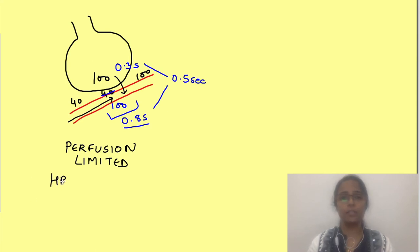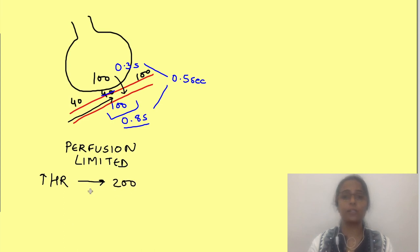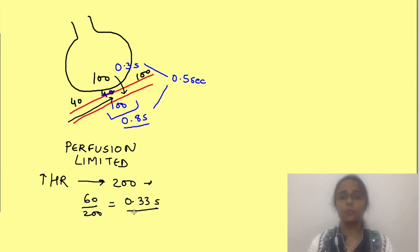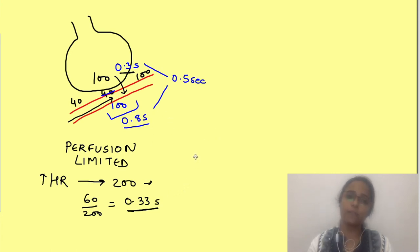What happens when heart rate increases during activity like climbing stairs or exercise? If we consider the maximum achievable heart rate as 200 bpm, the duration of the cardiac cycle at that rate is 60 ÷ 200 = 0.33 seconds. Even at this heart rate, there is still sufficient time for oxygen to cross the membrane. And if oxygen can cross in that time, carbon dioxide will also be able to diffuse, since it diffuses faster than oxygen.